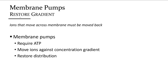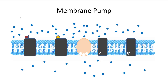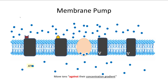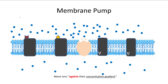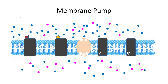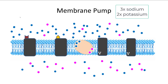Membrane pumps require energy because they move ions back against their concentration gradient to reset the balance after the ions have gone through the channels. ATP is used to move these ions back into place. The pump not only moves sodium out, but also moves potassium back in at the same time. Both ions are moved against their concentration gradients, thus needing ATP. This returns them to their proper balance.